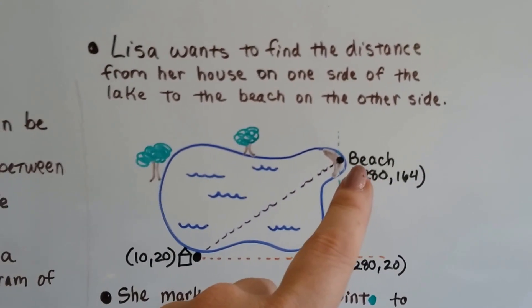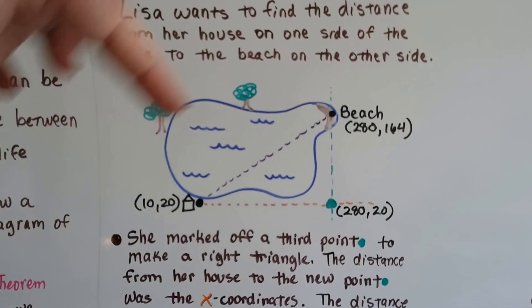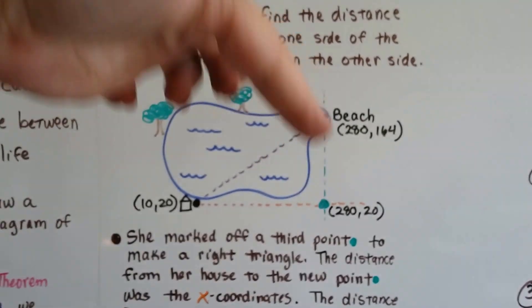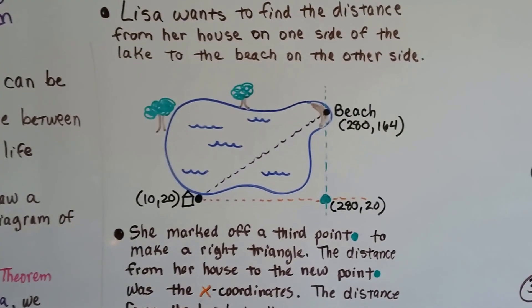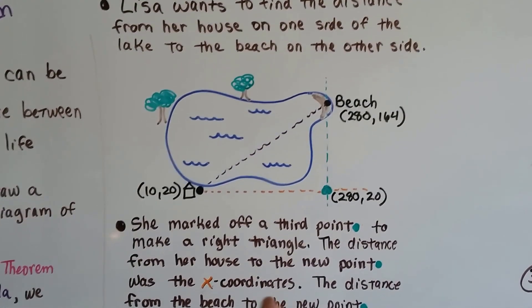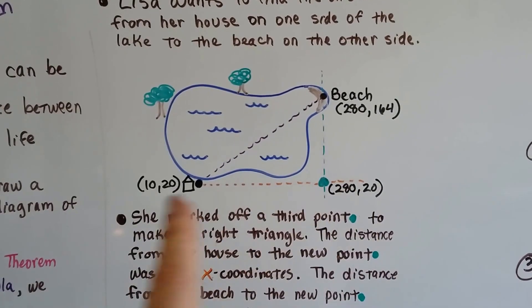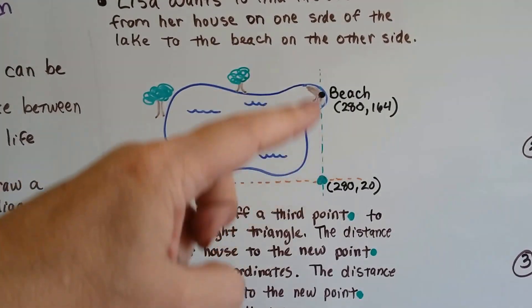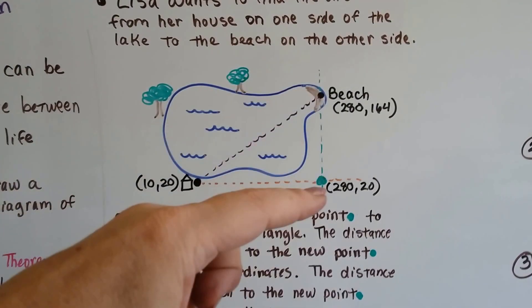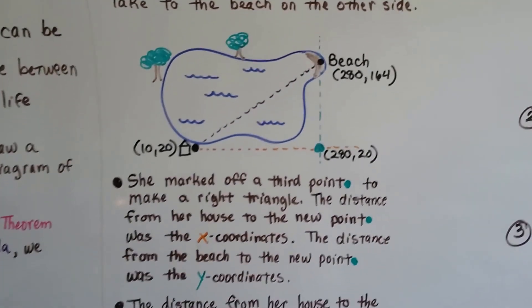And 280 and 164 for the beach. So she marked off a third point down here to make a right triangle, and the distance from her house to the new point, this green one, is going to be the x-coordinates. And then this distance between the beach and the new point is going to be the y-coordinates.